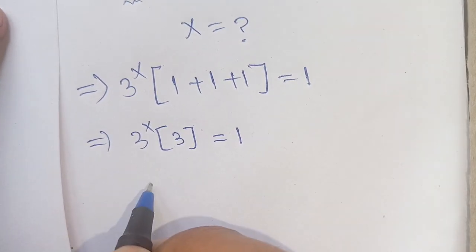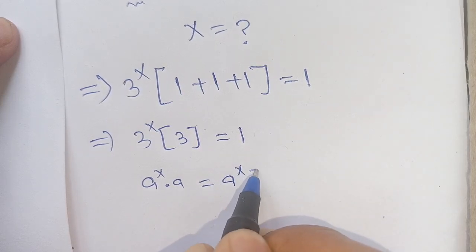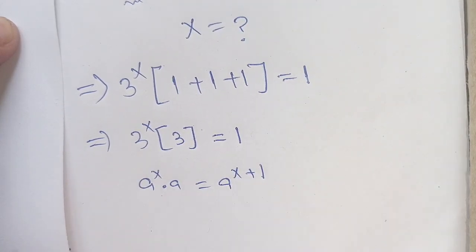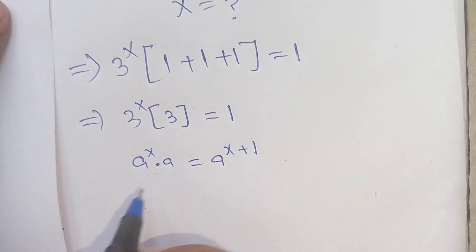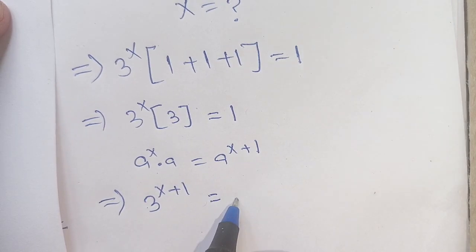Now it is the form of a^x times a, which is equal to a^(x+1). Here a is 3, and applying this identity we get 3^(x+1) = 1.